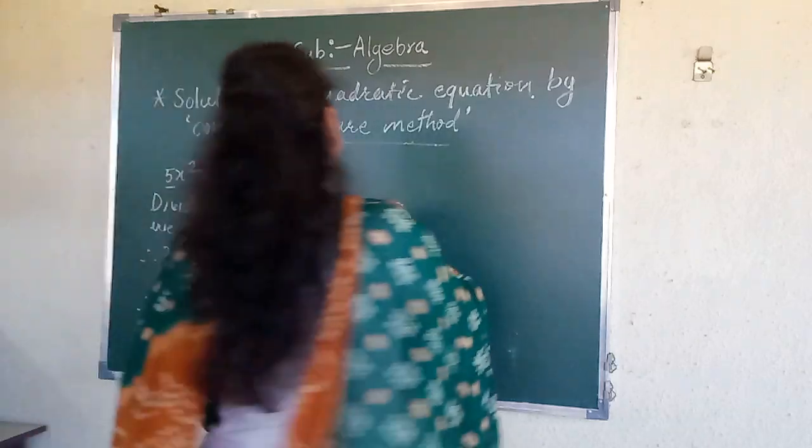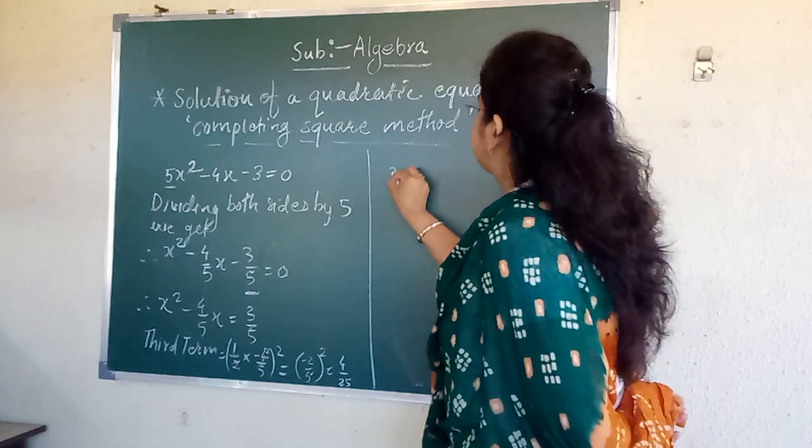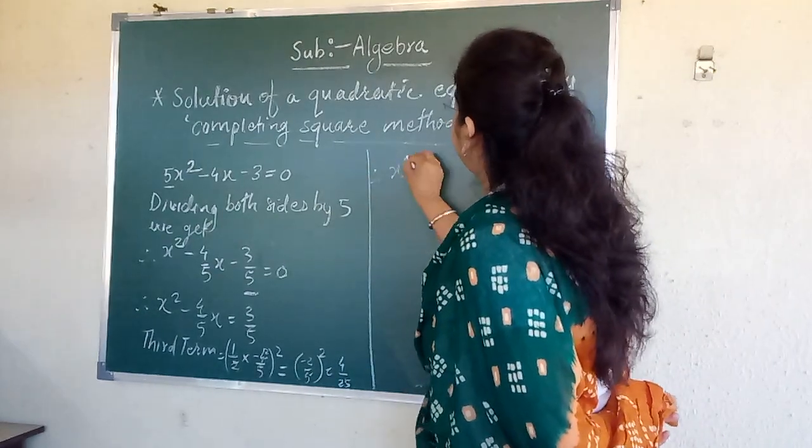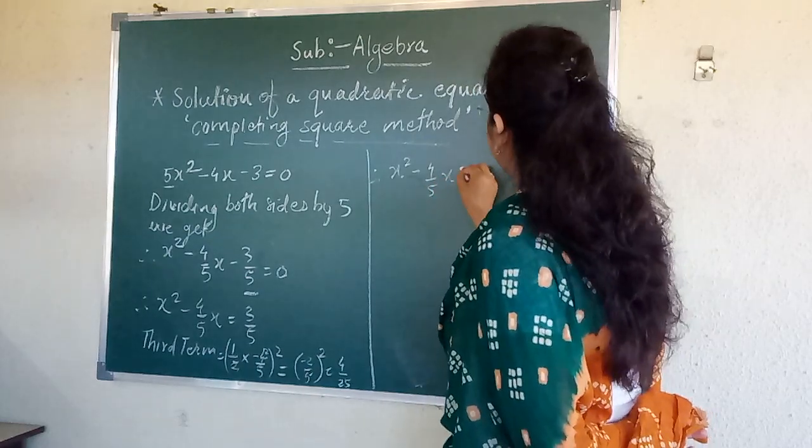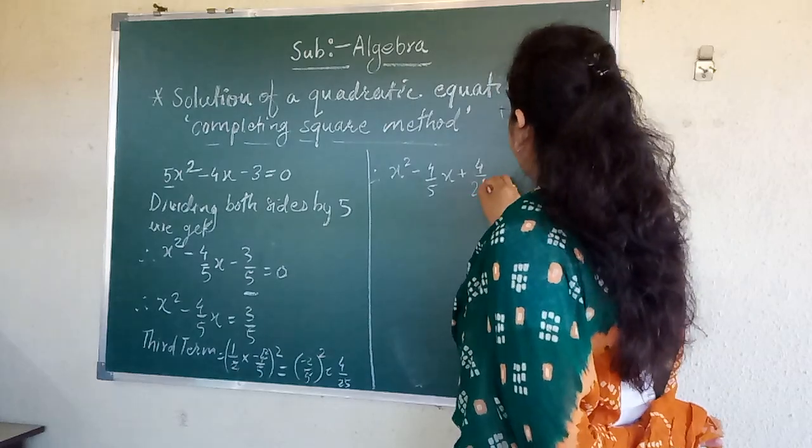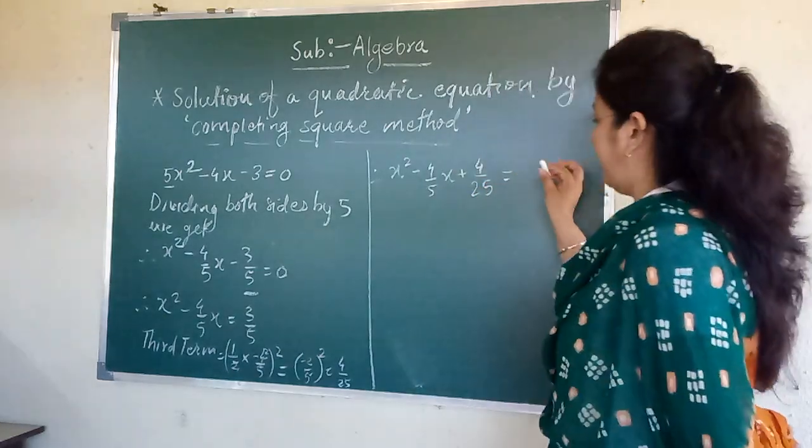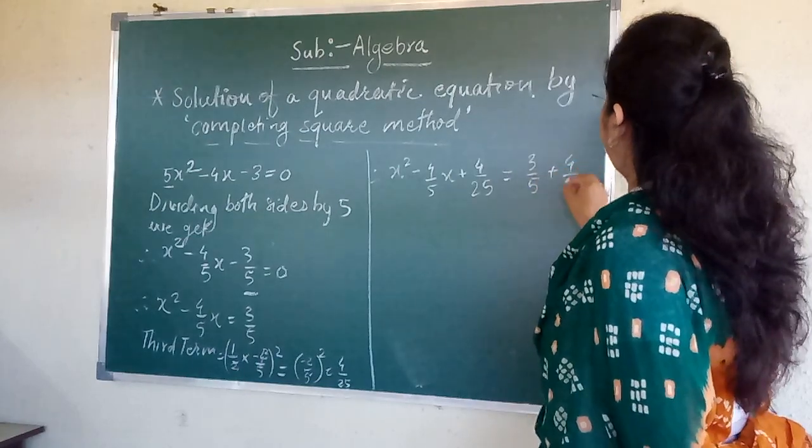Left hand side also and right hand side also. So x² - 4/5x + 4/25. Here also we will add 3/5 + 4/25.